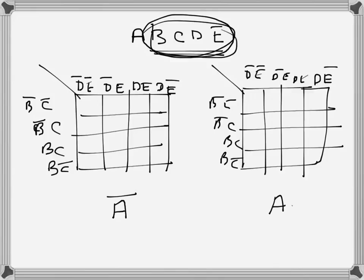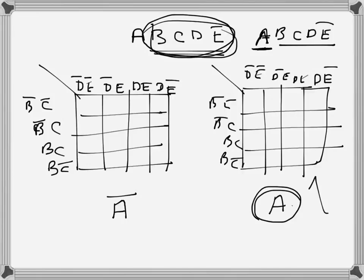Whenever we have an expression, let's say abcde̅, we see that 'a' is present, so it goes in the Kmap for 'a'. Then bc corresponds to a column, and dē corresponds to a row, so we place a 1 at that intersection. This is just one product term from a sum-of-products expression.